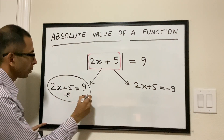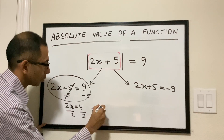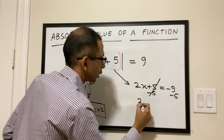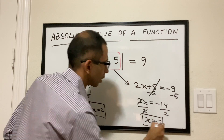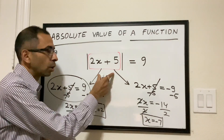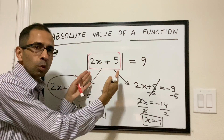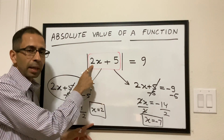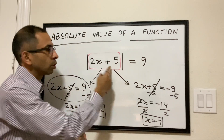When we solve the first scenario, we do minus 5 on both sides: 2x equals 4, divide by 2, and we get x equals 2. For the second scenario, minus 5 on both sides gives 2x equals minus 14, divide by 2, and we get x equals minus 7. So there are two solutions. Checking: when x is 2, 2 times 2 is 4, plus 5 is 9, and the absolute value of 9 is 9. When x is minus 7, minus 7 times 2 is minus 14, minus 14 plus 5 is minus 9, and the absolute value of minus 9 is also 9. So x equals minus 7 is also a solution.